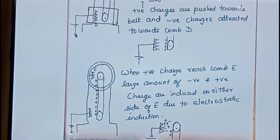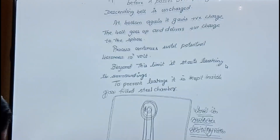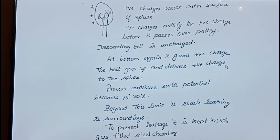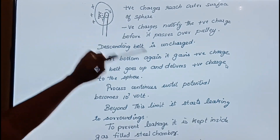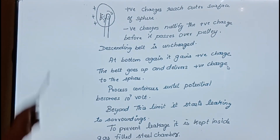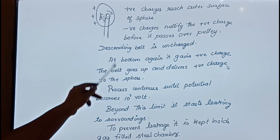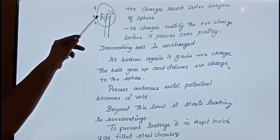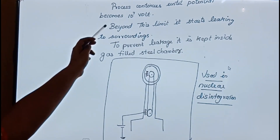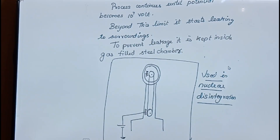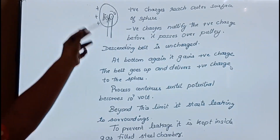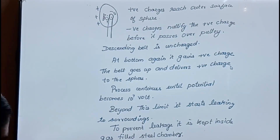The belt, after passing over the pulley at the top, is neutralized — the descending belt is uncharged. At the bottom, the process repeats and the belt again gets a positive charge. This continues until the potential on the sphere reaches 10 power 7 volts.